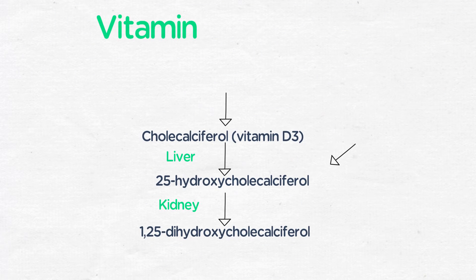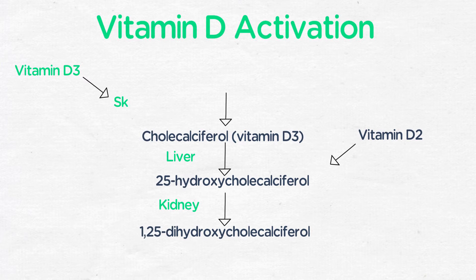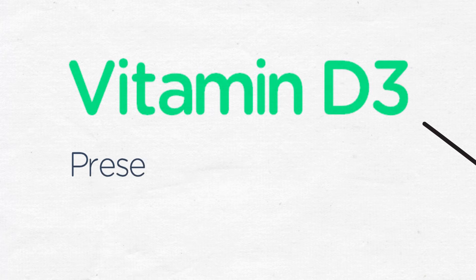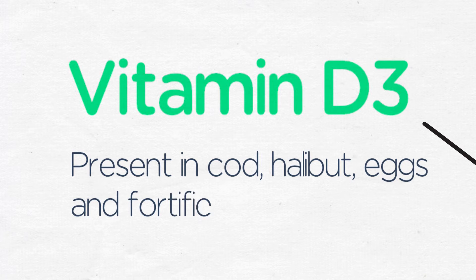Active vitamin D needs to be activated from either vitamin D3 or vitamin D2. Vitamin D3 can be synthesized in the skin from 7-dehydrocholesterol by the presence of UV light. However, vitamin D3 is also a supplement which is present in fortified milk, or present in the liver of cod, halibut, and some eggs.